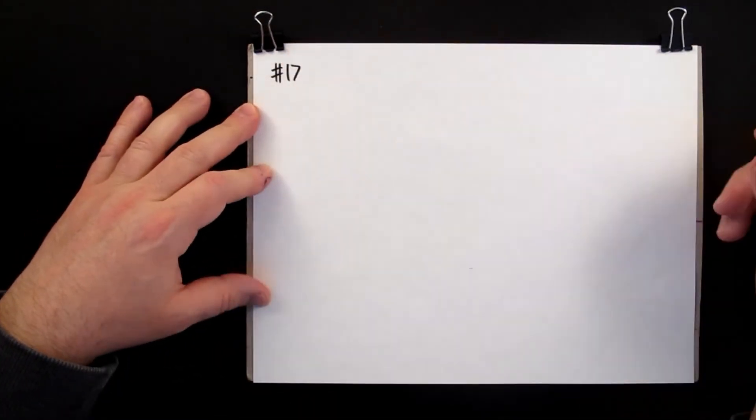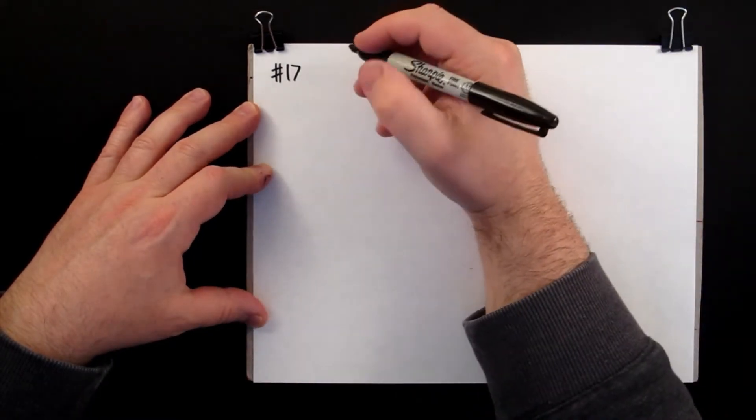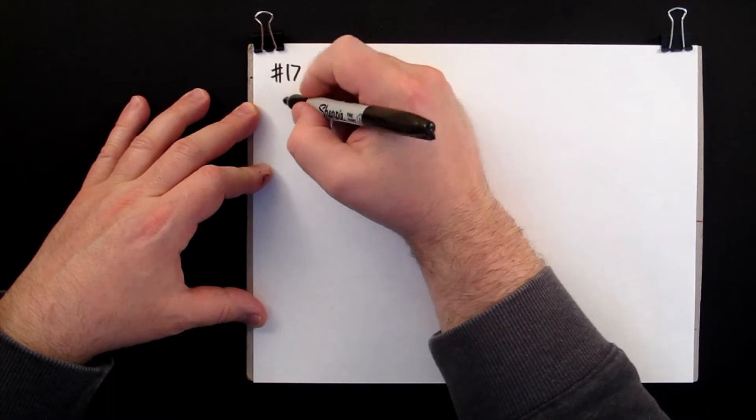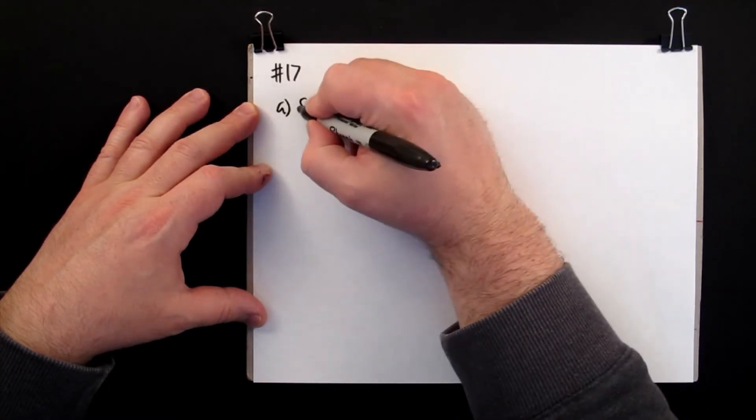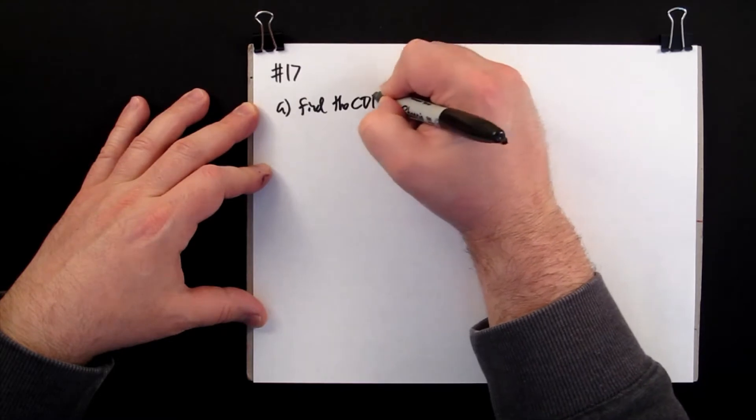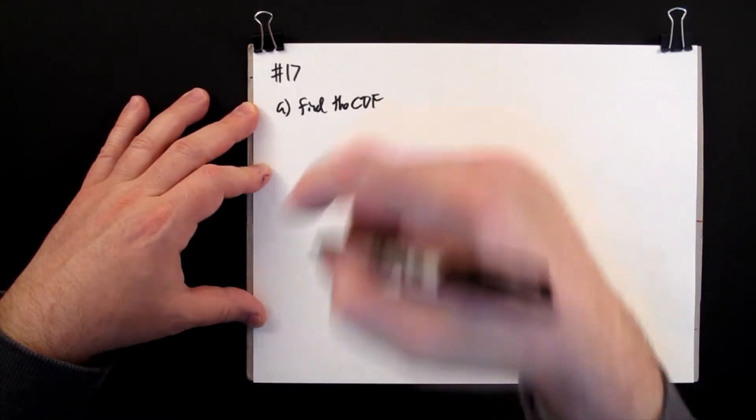Number 17. For an exponential variable with parameter A, find the CDF. Find the cumulative distribution function.